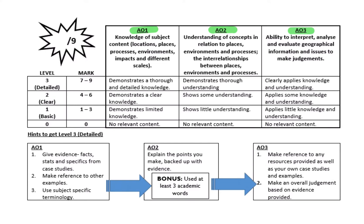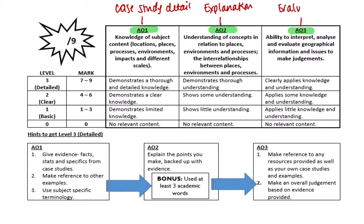AO1 is about anything specific — case study detail, for example, fits really nicely here. AO2 is our explanation, so that's adding something onto our points. In geography the most common way to do this is by using phrases like 'this means that.' AO3 is evaluation — weighing up what's good or bad about something.